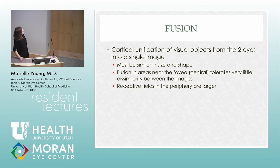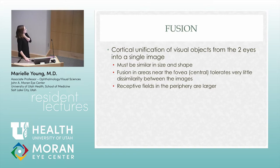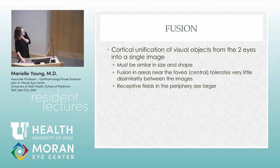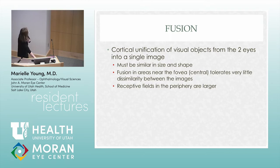Fusion in areas near the fovea tolerates very little dissimilarity between the images, because you have your best 20/20 vision right there around the fovea. You can tolerate a little more dissimilarity in peripheral vision because your vision isn't as good there — so you can pull those images together more easily than something right in the center of your vision.